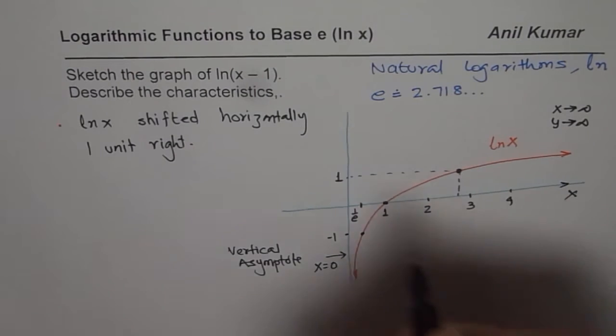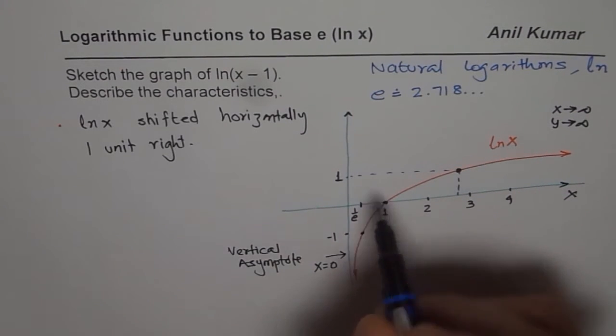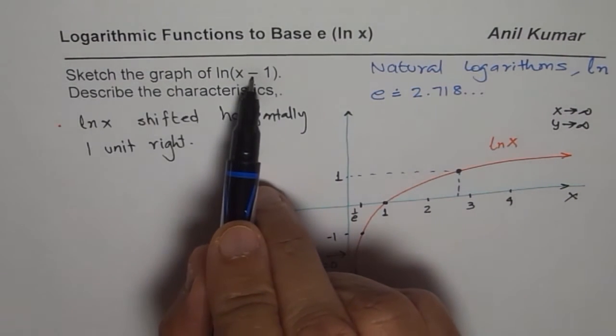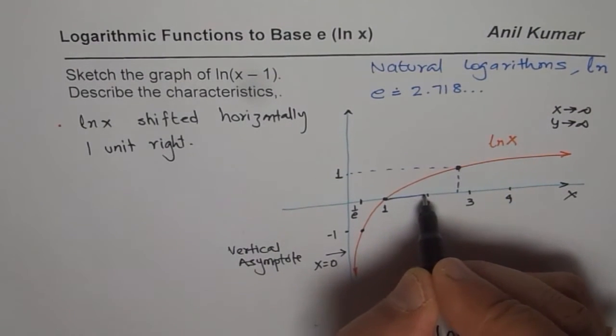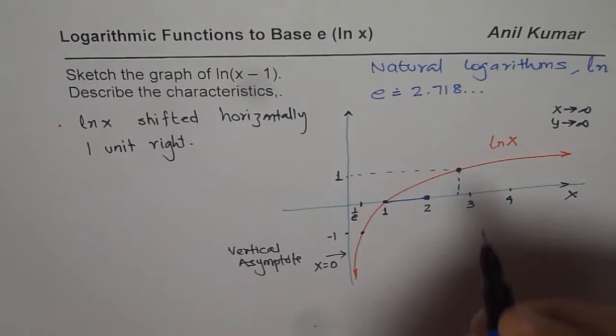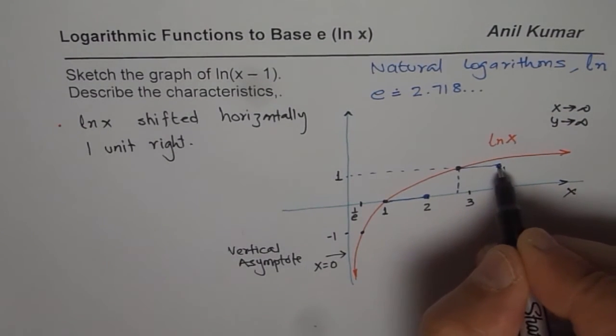These are the considerations we will keep in mind. We have already sketched the parent function ln(x). Now what we need to do is shift this function one unit to the right. Since it is ln(x-1), this x-intercept will move to position 2, so we'll have a point here.